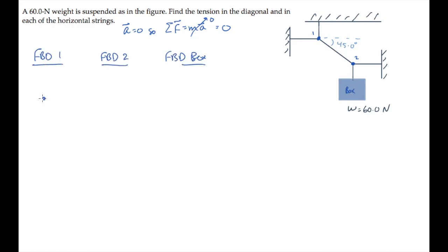Looking first at knot number one, we see there are three tensions acting on it. There's the tension from this string, I'll call T1, tension from the vertical string, T2, and tension from the diagonal string, we'll call that one T. So the free-body diagram looks like this, where the angle theta is 45 degrees.